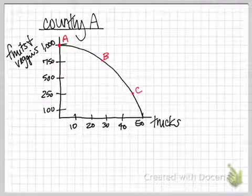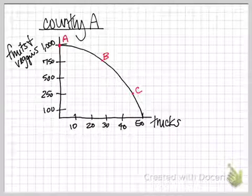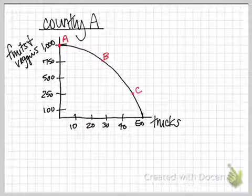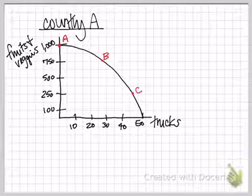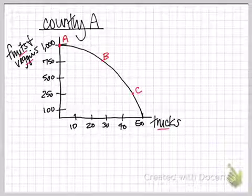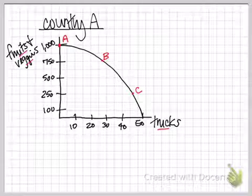So here's a fictitious example. We have our country, Country A. It's a very simple example here. Our country can use its resources to produce two different things, fruits and vegetables or trucks. Those are their two options for production.